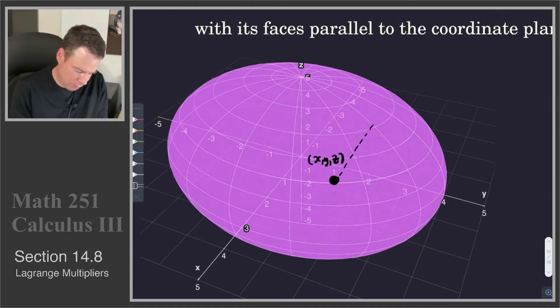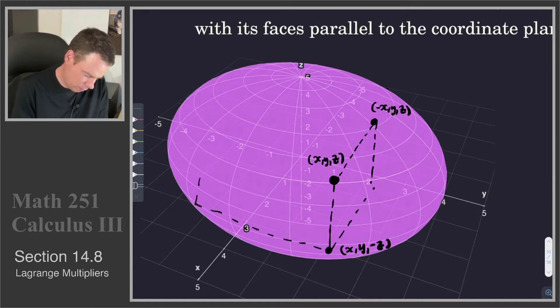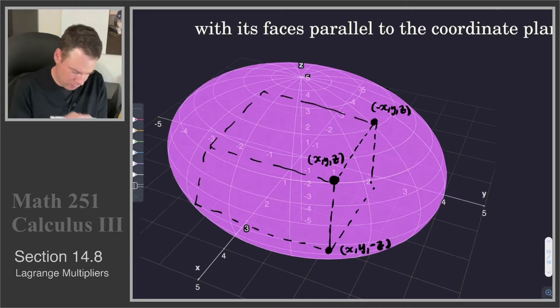Then once we have that, we would get the vertices for the other points by just negating the x value, so that would be (-x, y, z), and I'd get the one down here by negating the z value, so that would be (x, y, -z), and so on. We could get all of these different points and we would get our rectangular box.